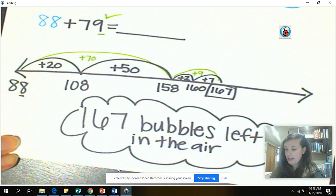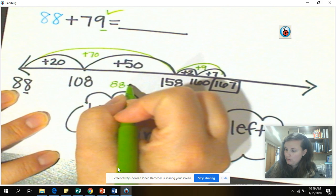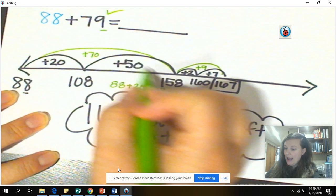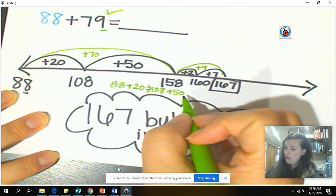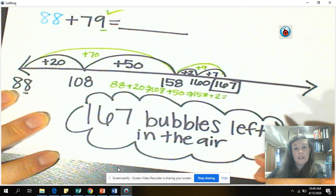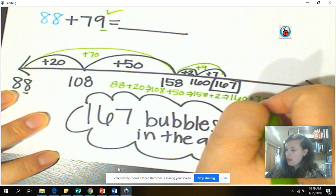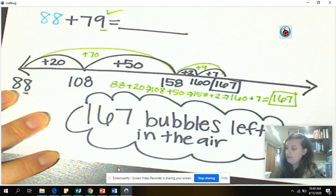As I'm talking through that, I realized I did not write out my number sentence according to my number line. Let's do that really quick. So we started with 88. We then added 20 to get to 108. Then we added 50 to get us to 158. Then we added 2 because we wanted to get to that friendly number. And the friendly number here was 160. So we got to 160. And then the final ones we had left over were seven ones. So that got us to our final answer of 167, and then bubbles left in the air.